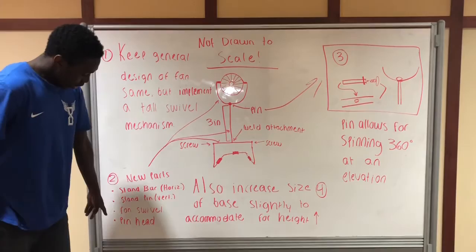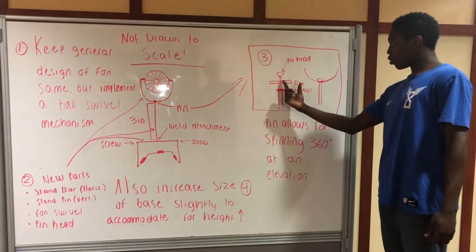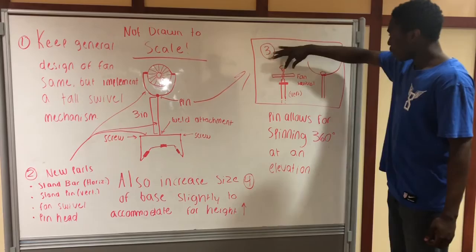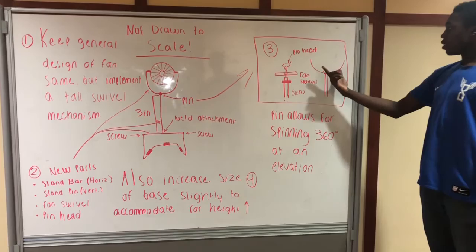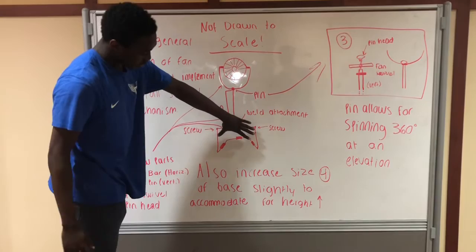The final piece added is the pin head, shown here in more detail. The vertical stand pin slides through the hole of the fan swivel, and together with the pin head — represented right here — this allows the fan to spin 360 degrees horizontally. We also slightly increased the base to accommodate for the increased height of the fan.